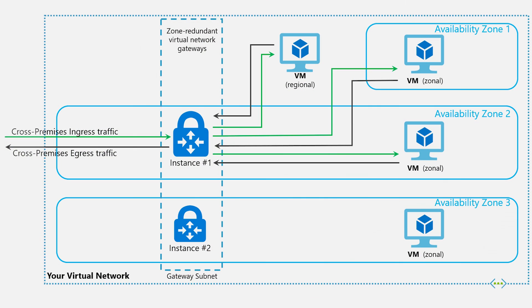The other service to add support for availability zones is ExpressRoute and VPN gateways. You now have, in public preview, the option to deploy what is called a zone-redundant gateway, which will automatically be deployed in a zone-redundant fashion across availability zones. You also have the option to deploy zonal gateways, which gives you the option to deploy a gateway into a specific availability zone of your choice. When you do this, all instances of the gateway will reside in that availability zone.